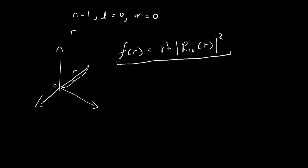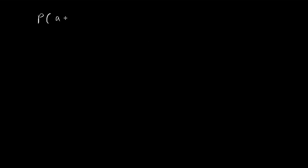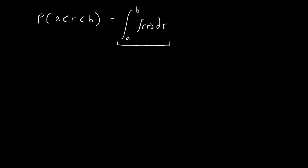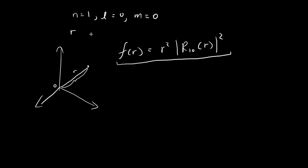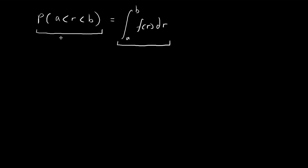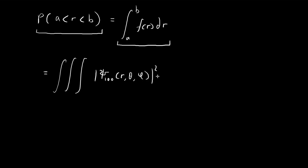If you don't know why this is the probability density function, we can actually show it rather easily. If f of r is a probability density function, and we want to find the probability that we will detect a particle at a distance between a and b away from the origin, what we would do is integrate the probability density function from a to b dr. And then given a wave function, if we wanted to obtain this probability, what we would do is take the wave function — in this case ψ₁₀₀(r, θ, φ) — and then square this and integrate it.